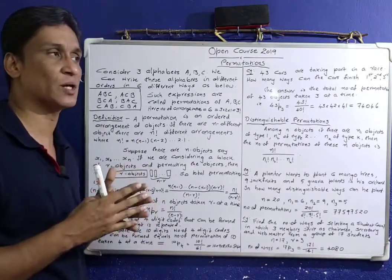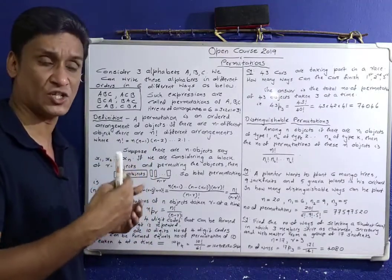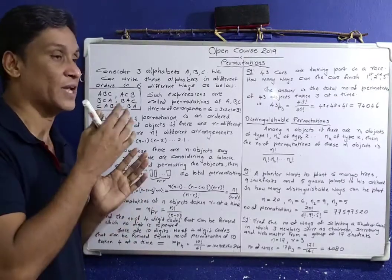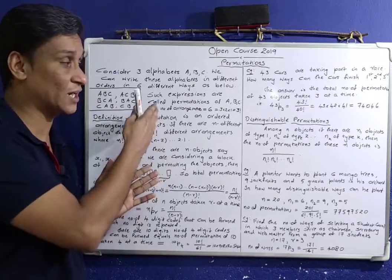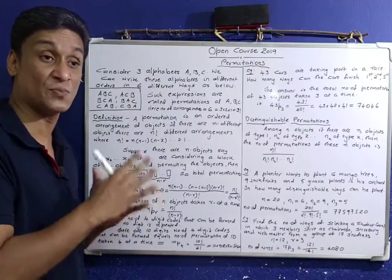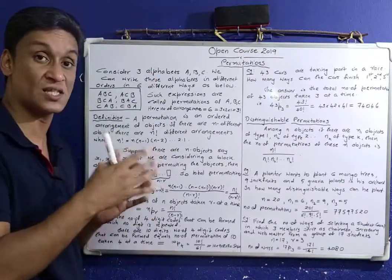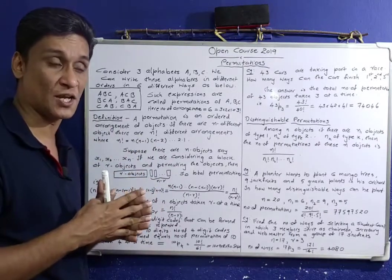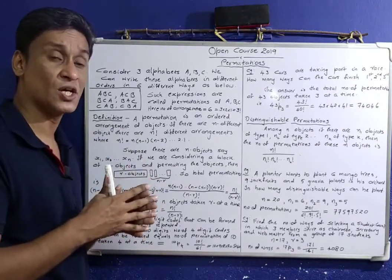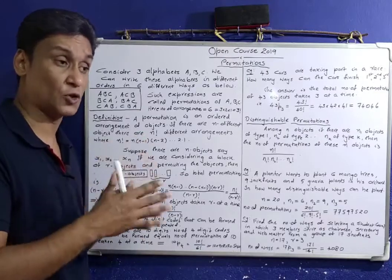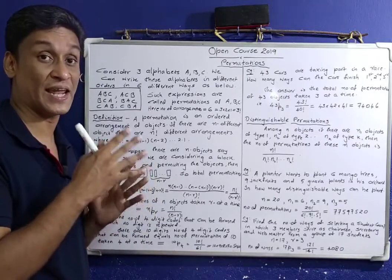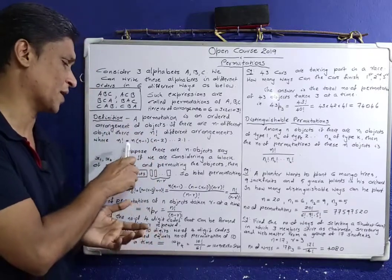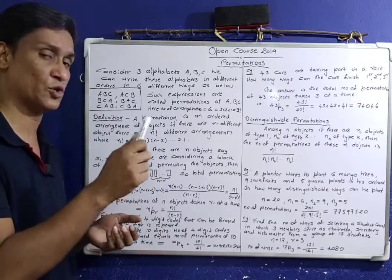Different ways of arranging are called permutations. n objects can be arranged in n factorial ways, or can be permuted in n factorial ways. n factorial is given by n into n minus 1 into ... into 2 into 1.